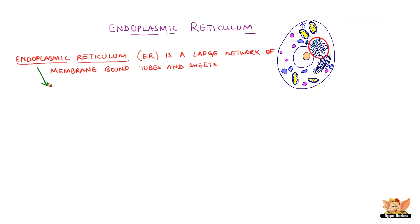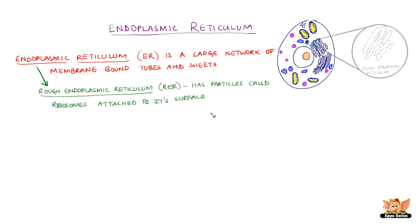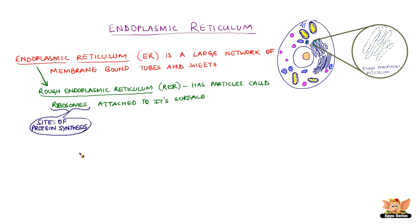There are two types of endoplasmic reticulum. The rough endoplasmic reticulum, or RER, has particles called ribosomes attached to its surface, hence it looks rough under the microscope. The ribosomes are also very important — they are the sites of protein synthesis.